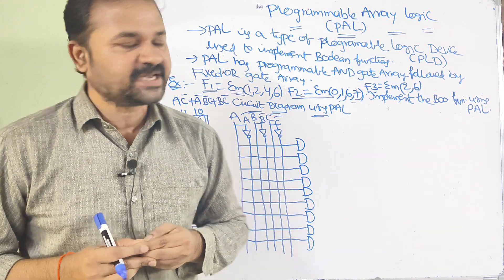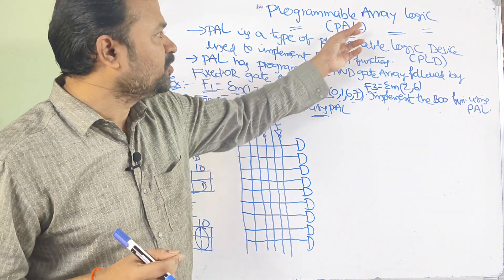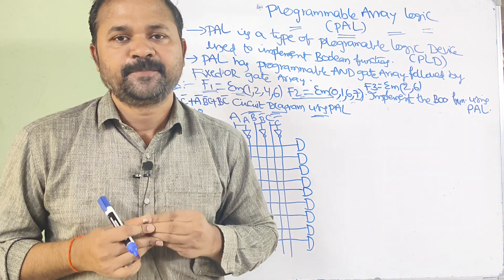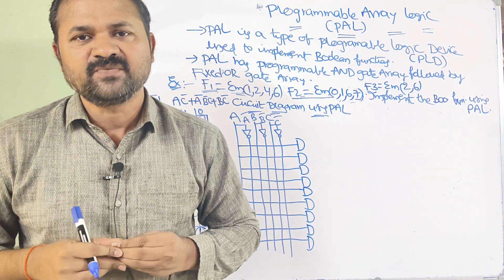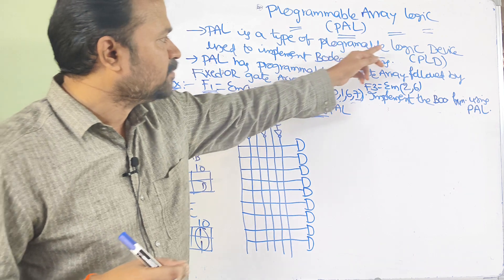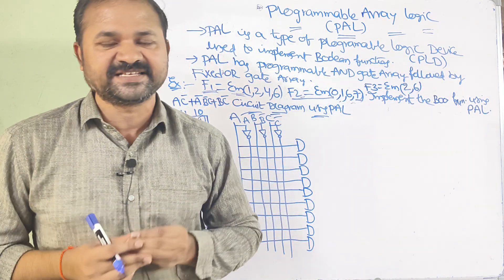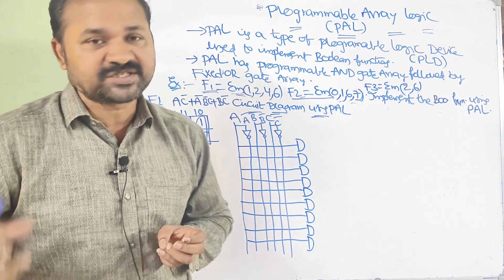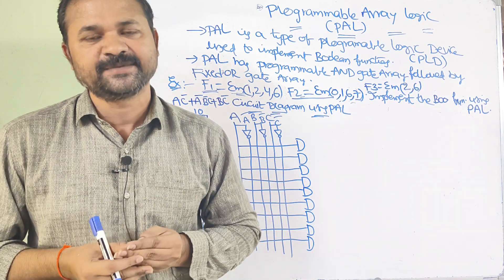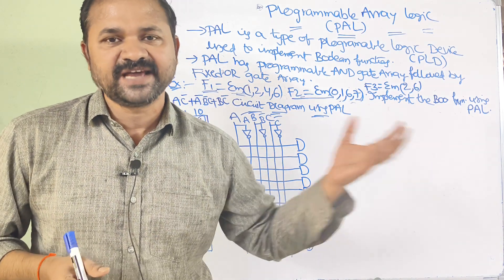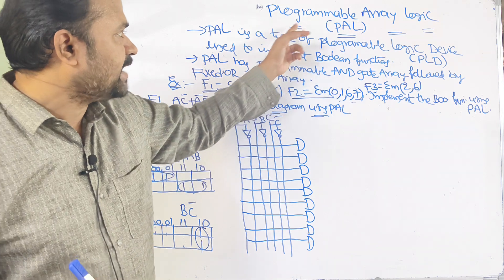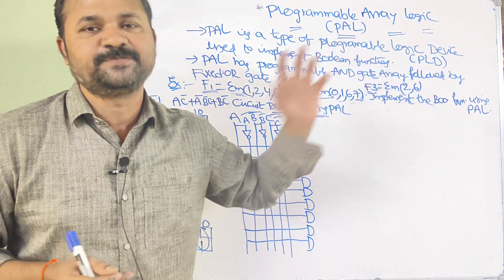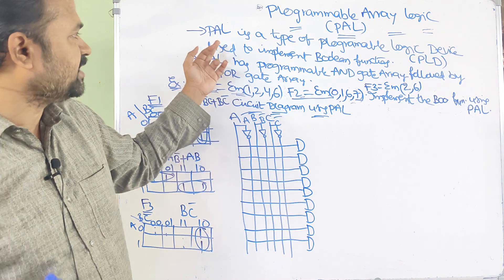Now let us discuss about programmable array logic, in short we can call it PAL. We have two types of programmable logic devices. The first one is programmable logic array, that is PLA, which we already covered in the last class, and the second one is programmable array logic, that is PAL. So let us see the explanation.